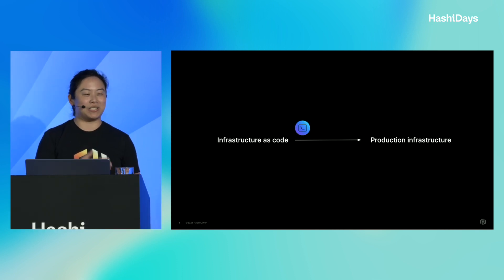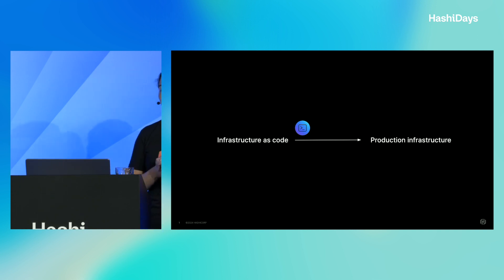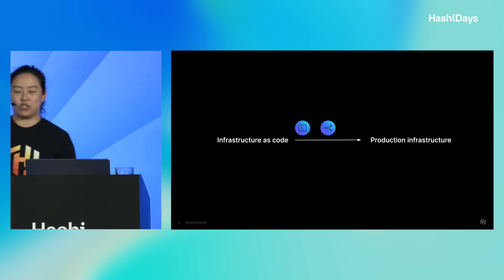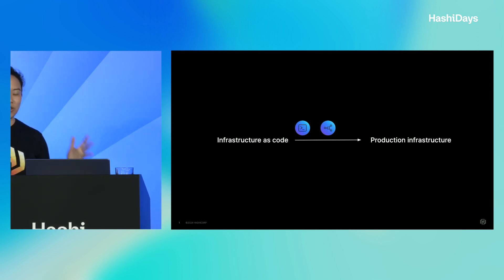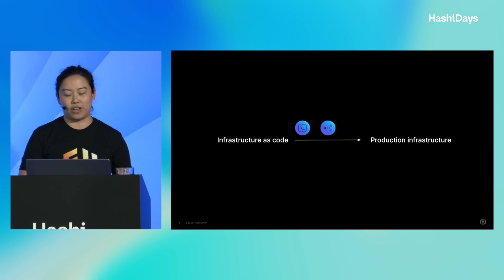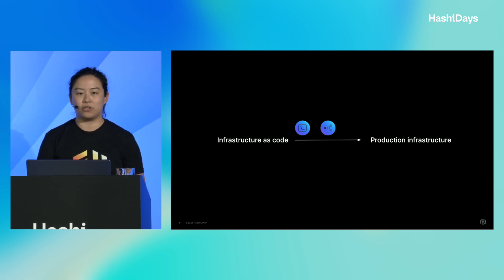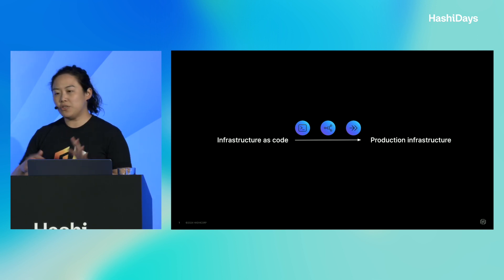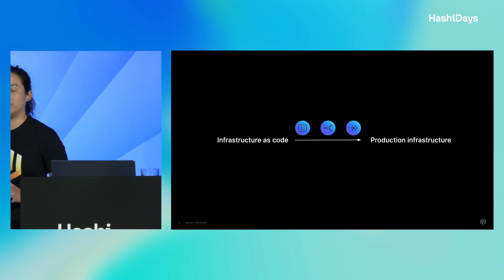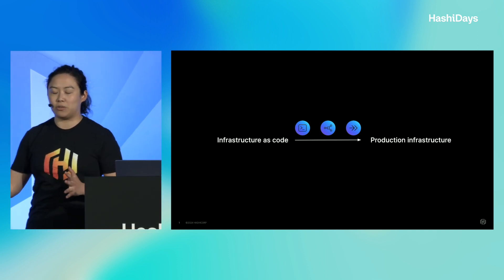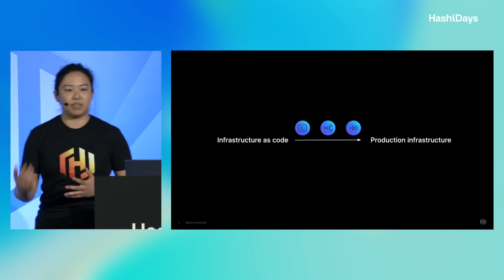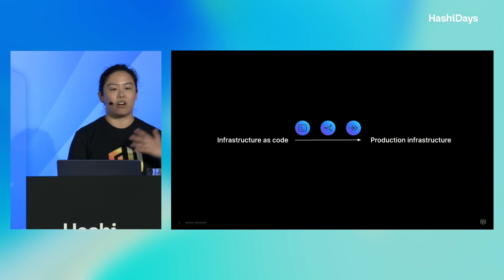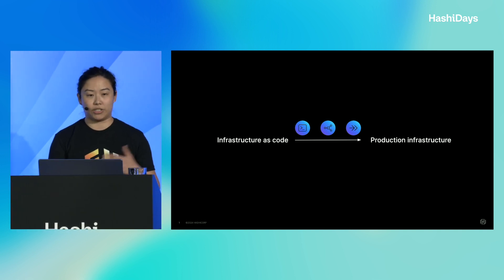Some of you may have started by deploying on your laptops with Terraform Apply — or as my teammate likes to call it, Terraform You Only Live Once. Eventually you share it with a friend and say you should be doing infrastructure as code so we can collaborate on these changes safely. You do this by adding it to version control, then you automate it, put governance and process around it. Instead of just continuously deploying, you're adding continuous delivery, gating changes to production, and empowering your development teams to make changes to production infrastructure using Terraform.